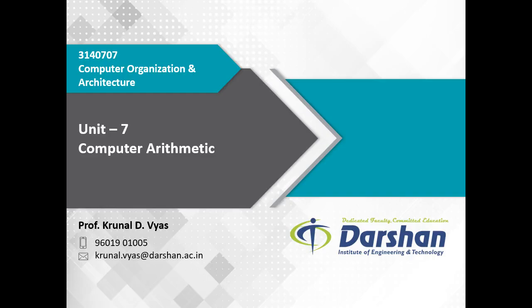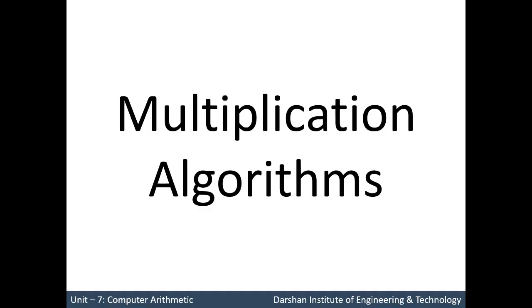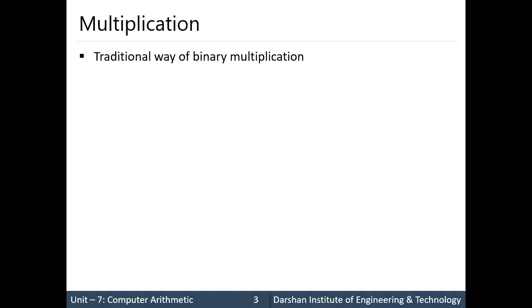In the last video of unit 7 we discussed addition and subtraction through algorithm. Now in this video we will discuss how multiplication works through algorithm. Let us take a traditional view of binary multiplication. We will take two numbers: 23 and 19. The binary number of 23 is 10111 and the binary number of 19 is 10011.